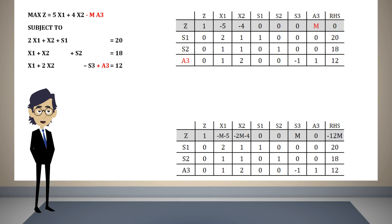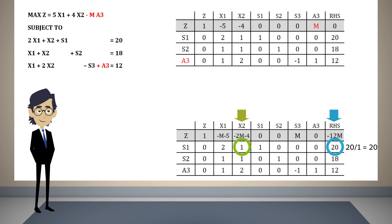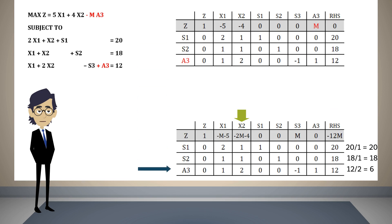Recall that M represents a very big value, for instance 1 million. When we scan the objective function row for negative values, we find two, and the smallest is minus 2M minus 4. Therefore x2 must enter the basis. To find the leaving basic variable, we divide the right-hand side column values by the coefficients of the entering variable, select the smallest ratio, and conclude that x2 enters and a3 leaves.